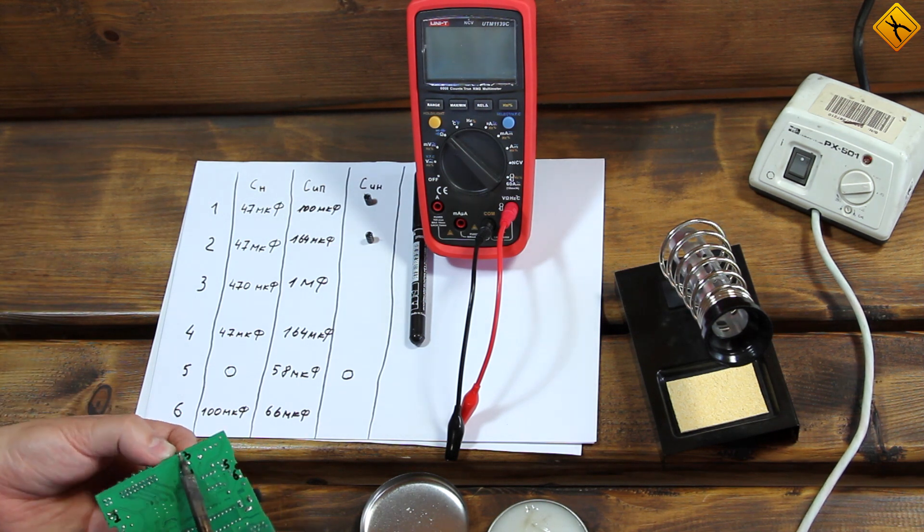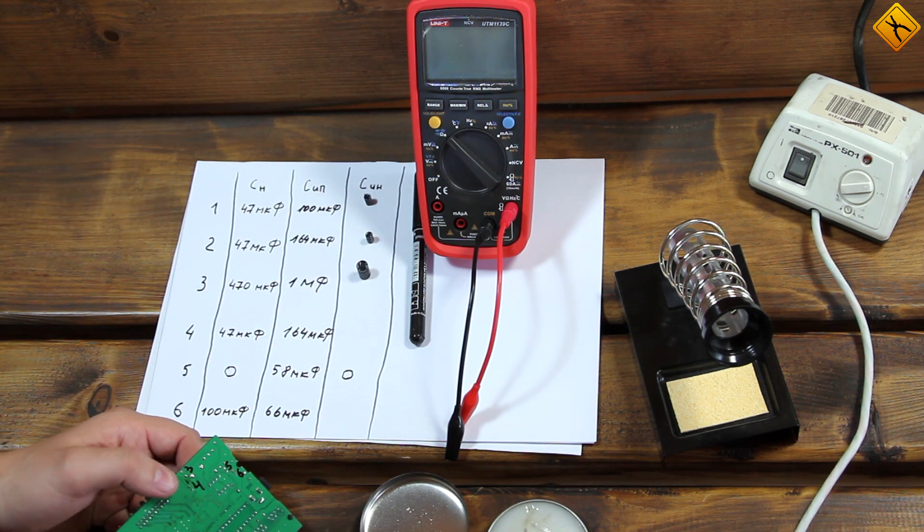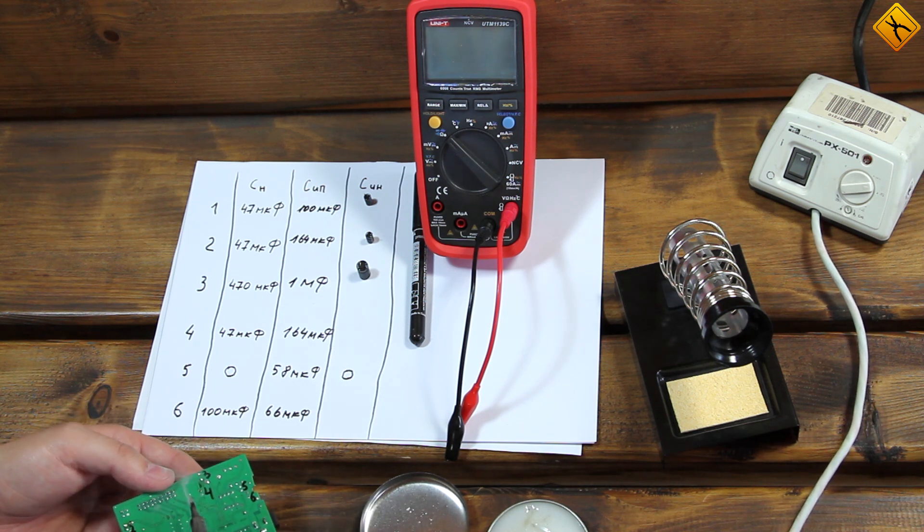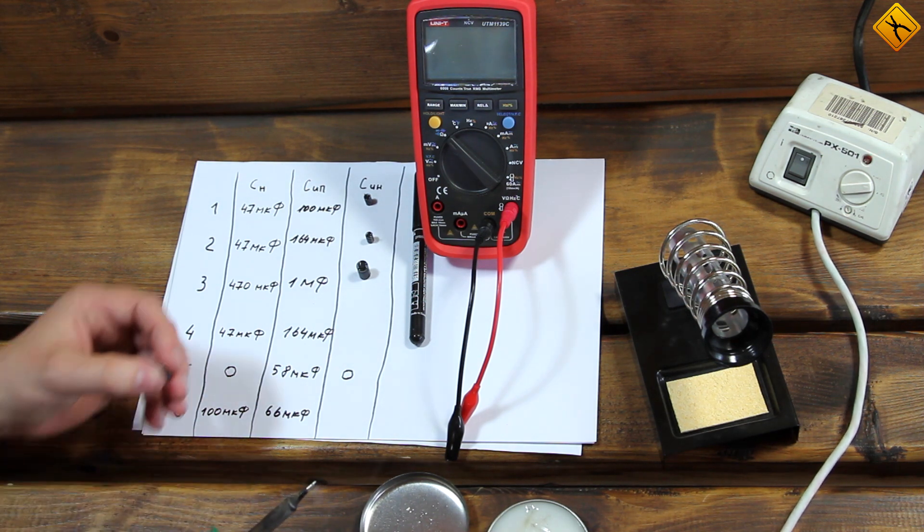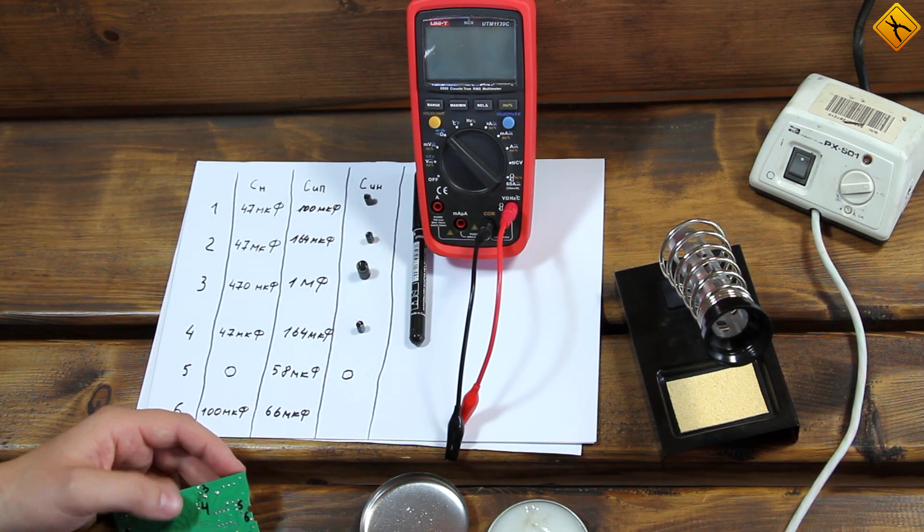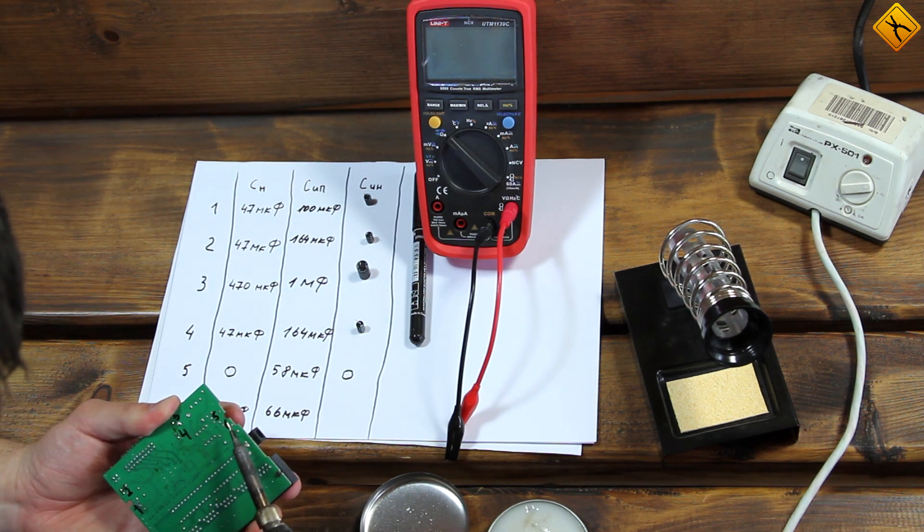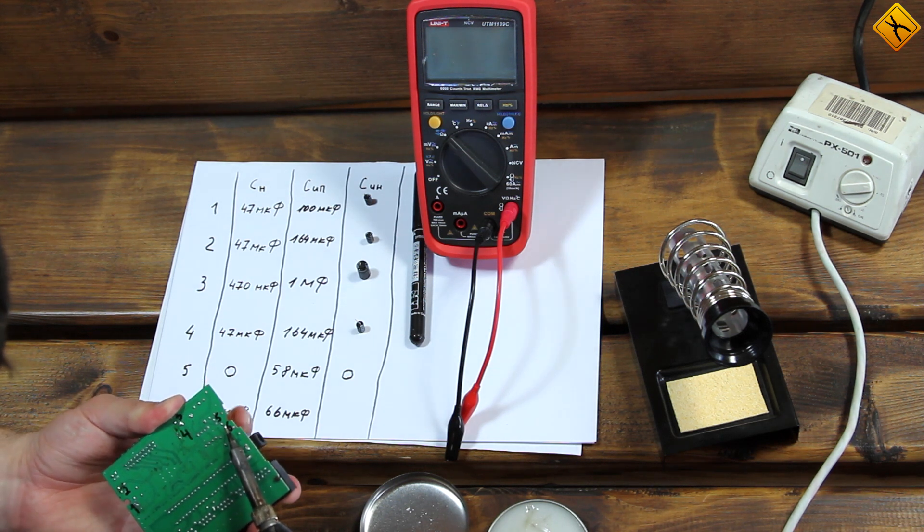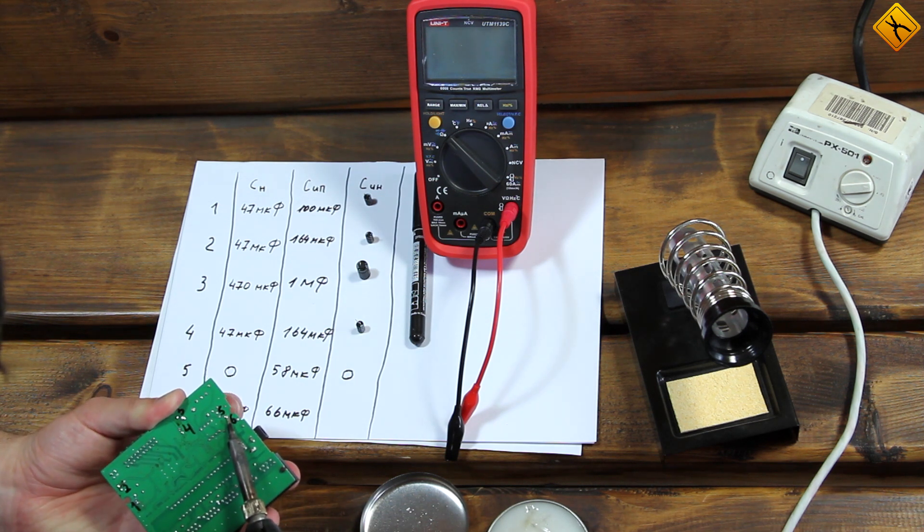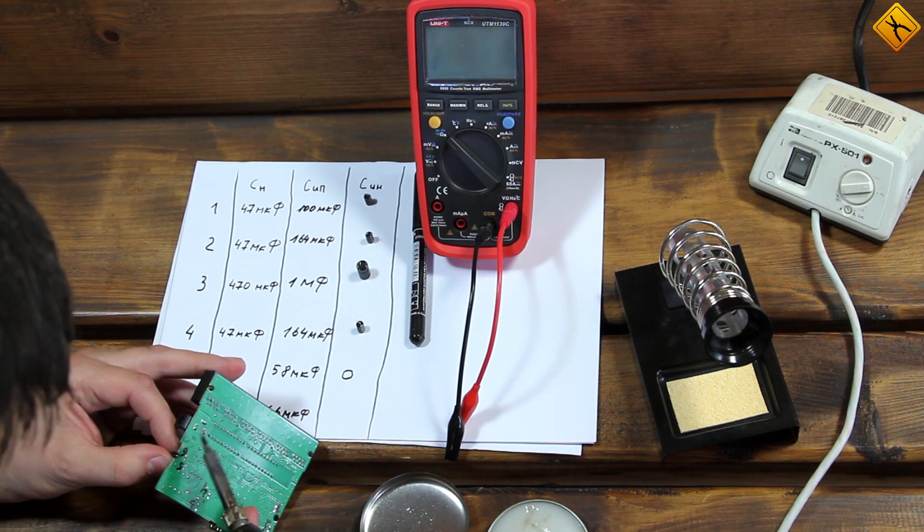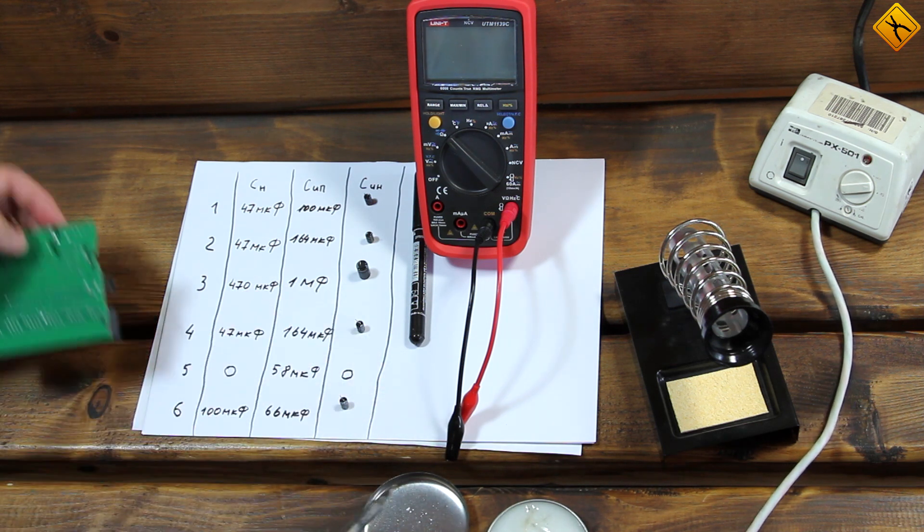Capacitor number three. Capacitor number four. There is no capacitor number five. And number six. This soldering iron tip is not very convenient for tasks like these. A bigger one would have been better.